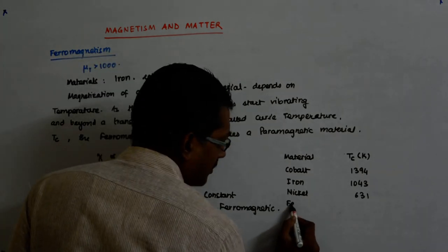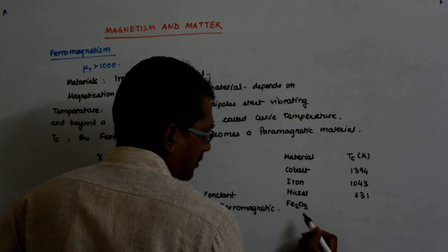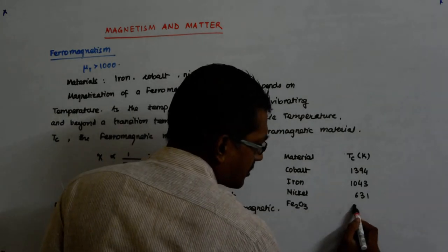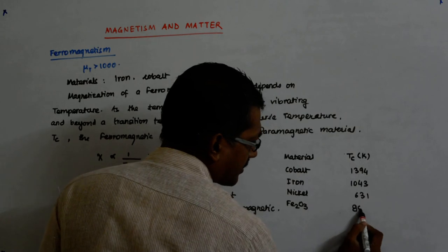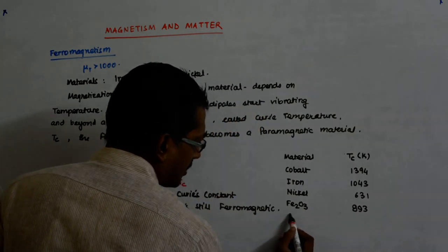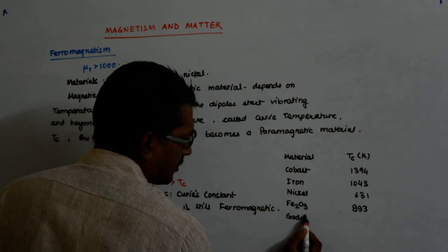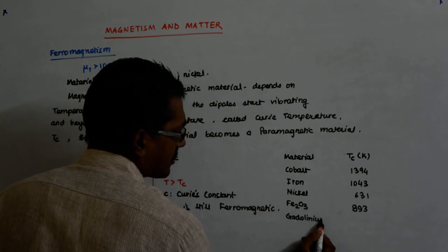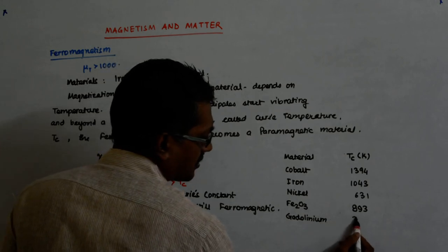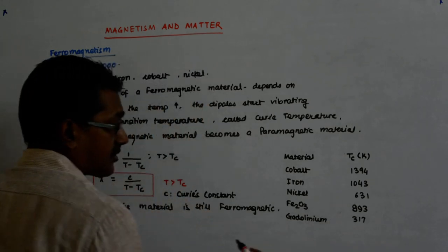And Gadolinium. Fe2O3? 3. 93. How much? 893. And Gadolinium. How much? 317. That is too low.